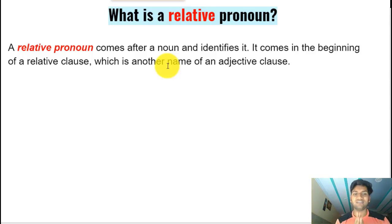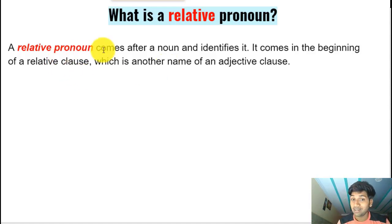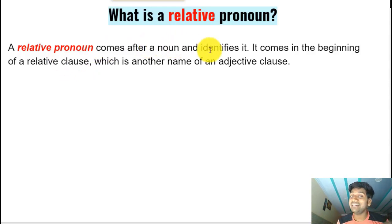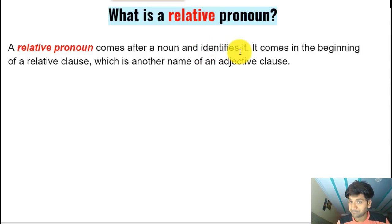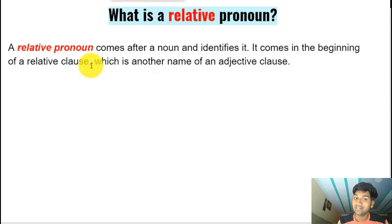The very first thing we'll do is understand what exactly a relative pronoun is. Then we'll look at different types of relative pronouns and understand them one by one. A relative pronoun is a type of pronoun that comes after a noun — sometimes a pronoun — and identifies it. It comes in the beginning of a relative clause, which is another name for an adjective clause. It relates to a noun or pronoun and comes in the beginning of that adjective clause.